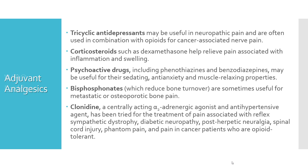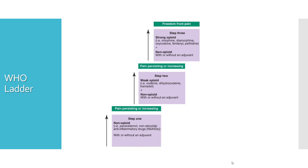Now let's talk about the WHO analgesic ladder, which was produced in 1986 to help combat cancer pain and is now widely used to manage many different types of pain. It has three steps, each containing a recommended level of pharmacological treatment. If pain persists, the patient's treatment should be moved up to the next step. The goal is for the patient to be pain-free at the lowest point on the ladder. Step one involves the use of non-opioid drugs; step two recommends adding a weak opioid; the final step advocates the use of strong opioids. Each step also suggests the use of an adjuvant.